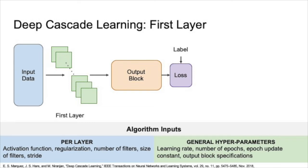In DCL, you specify the architecture you'd like to create, and the network is then trained from the ground up, layer by layer. Here, we see the first layer in output block of the network being trained.